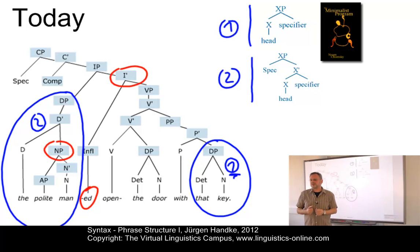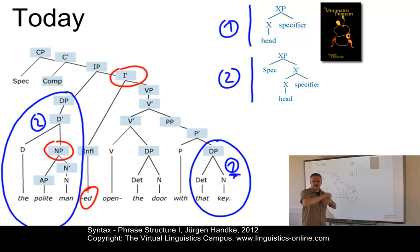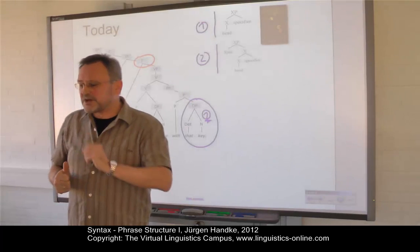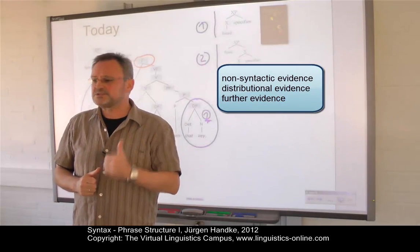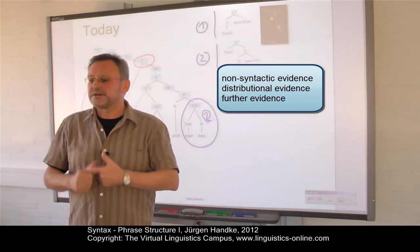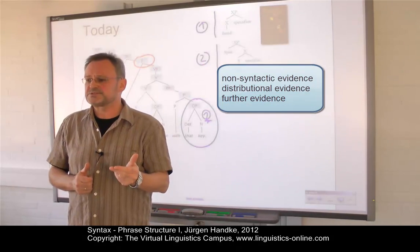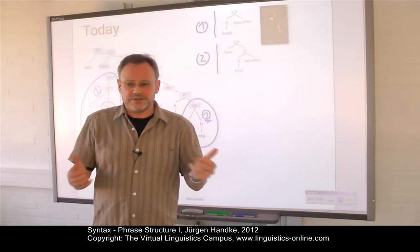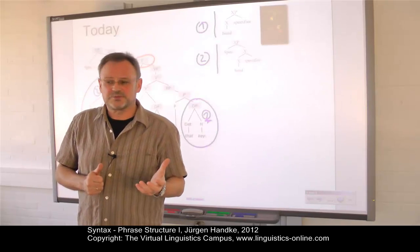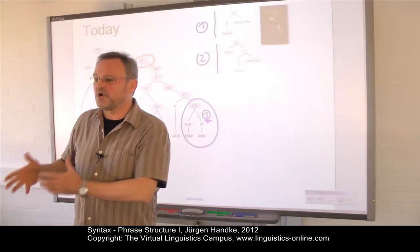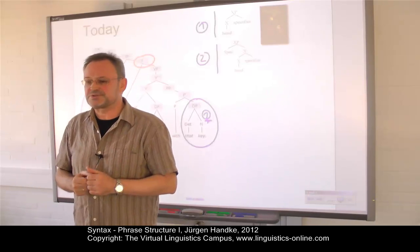Several interacting arguments lend support to the postulation of phrasal categories and branching as presented here. These arguments can be subdivided into non-syntactic evidence, distributional evidence, and other syntactic evidence. The e-lecture on phrase structure testing illustrates these arguments on the basis of various phrase structure rules.